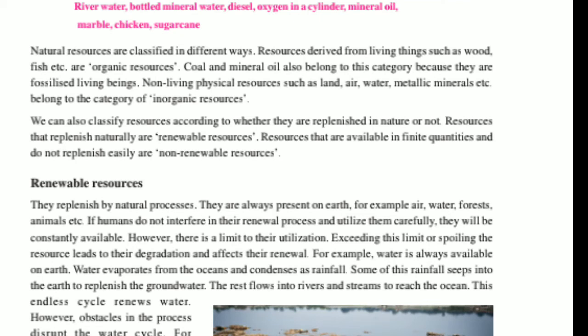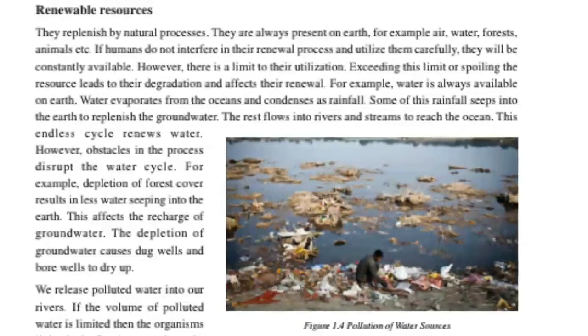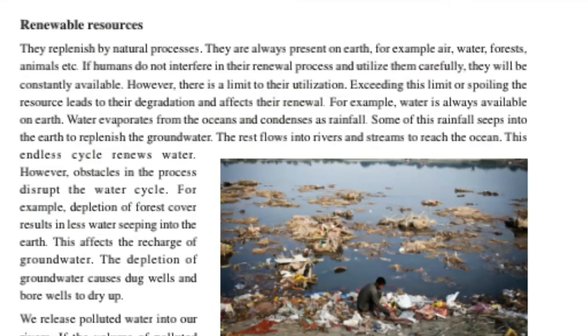We can also classify resources according to whether they are replenished in nature or not. Resources which are replenished naturally are called renewable resources. Resources that are available in finite quantities and do not replenish easily are called non-renewable resources. Renewable resources — such as air, water, forests, and animals — are always present on Earth.